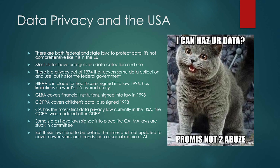HIPAA was put into place in 1996, but it does have limits. There are also more specific laws about financial institutions, children's data, and student data — that's FERPA. Currently, California has the most strict data privacy law, modeled after GDPR. Some states have signed laws into place, some haven't — Massachusetts laws are actually stuck in committee right now. Most laws tend to be behind the times. Because laws take two, three, or five years to put into place, they can't keep up with rapidly changing technology.